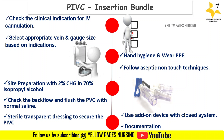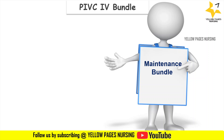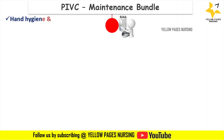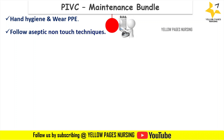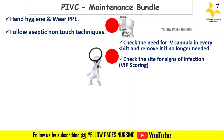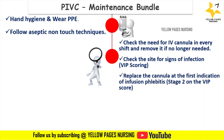Document the date of insertion, reason for insertion, catheter size, and site. Next comes the maintenance bundle. Perform hand hygiene and wear appropriate personal protective equipment. Follow aseptic non-touch technique. Check the need for IV cannula every shift and remove it when no longer needed. Inspect the site for signs of infection using VIP scoring — Visual Infusion Phlebitis scoring. Replace the cannula at the first indication of infusion phlebitis, that is stage 2 on the VIP score, and ensure the dressing is intact.